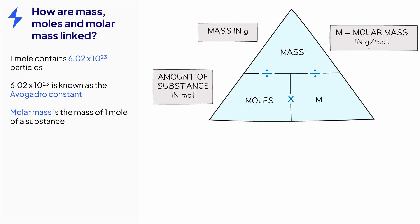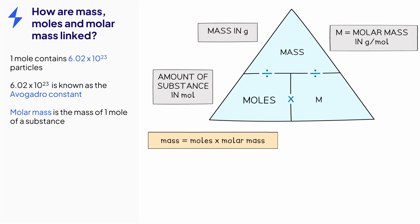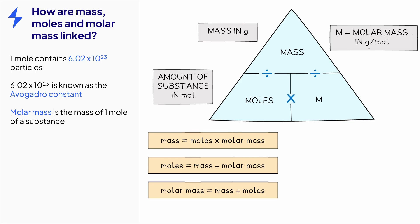You need to be able to calculate the number of moles of a substance in a given mass, and vice versa, so you need to understand the relationship between mass, moles, and molar mass, which is shown in this equation triangle. From this triangle we can see that the mass of the substance is equal to the amount of substance in moles multiplied by its molar mass in grams per mole. Using this triangle we can also obtain two further equations linking these quantities.